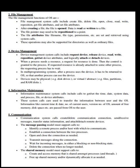Information maintenance system calls include calls to get or set the time, date, system data, and process, file, or device attributes. These system calls transfer information between the user and the OS — information like current time or date, number of current users, OS version number, amount of free memory, disk space, etc.